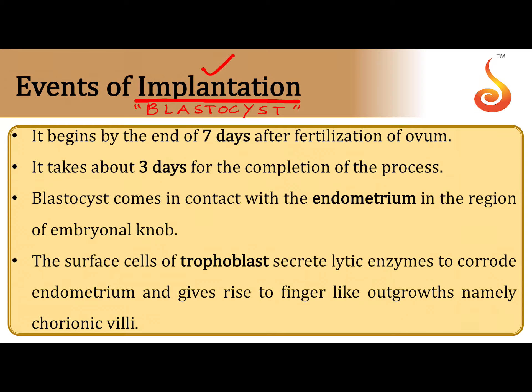This process is referred to as implantation. When does implantation happen? By the end of the seventh day after fertilization, the process of implantation is completed. The whole process may take up to about three days, or it may happen quicker.